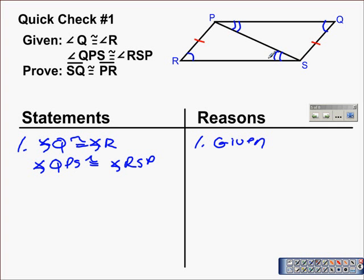We already have two pairs of corresponding angles congruent. As we've seen many times before, when two triangles share a side, we can mark that side congruent to itself. So PS is congruent to segment PS, and that's because of the Reflexive Property.